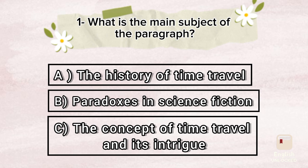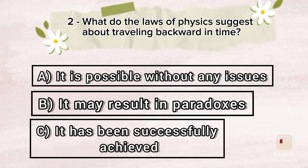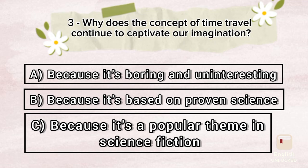Choose the correct answers. What is the main subject of the paragraph? A. The history of time travel. B. Paradoxes in science fiction. C. The concept of time travel and its intrigue. What do the laws of physics suggest about traveling backward in time? A. It is possible without any issues. B. It may result in paradoxes. C. It has been successfully achieved. Why does the concept of time travel continue to captivate our imagination? A. Because it's boring and uninteresting. B. Because it's based on proven science. C. Because it's a popular theme in science fiction.